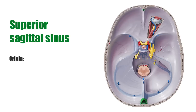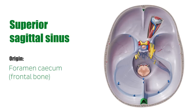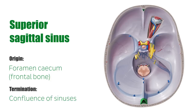It commences anteriorly from the foramen cecum in the frontal bone and follows the contour of the calvaria along the midline to its termination at the confluence of sinuses at the internal occipital protuberance.